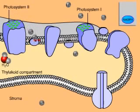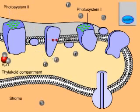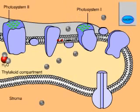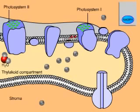Their energy is used to pump hydrogen ions from the stroma into the thylakoid compartment, creating a concentration gradient. Electrons leaving this electron transport chain enter photosystem 1, replenishing its lost electrons.